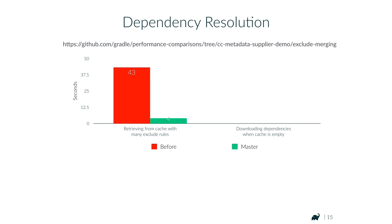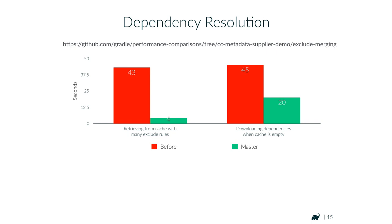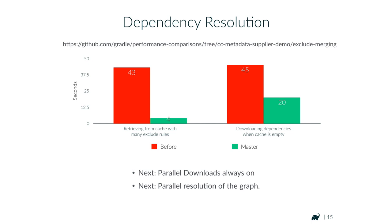More applicable to most projects is making dependency downloads faster by making the locks more fine-grained, so that when you run a build in parallel, dependency downloads are much faster. After applying the exclude rules improvement, when the cache is empty and all dependencies need to be downloaded, with Gradle master we got this down to 20 seconds. Coming next: parallel downloads always on even without dash-parallel, and then actual parallel resolution of the dependency graph.